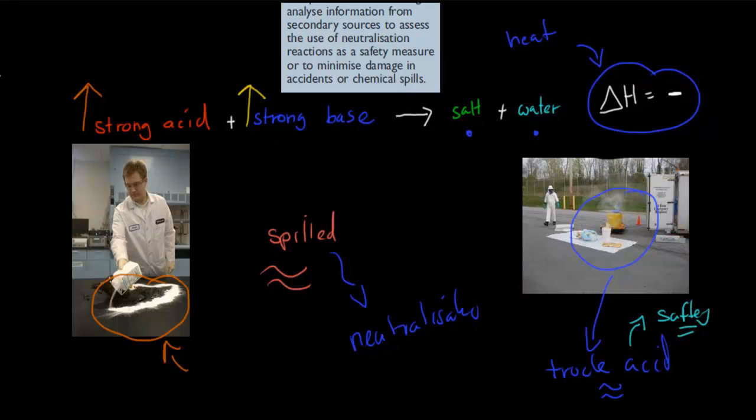This is what we're going to talk about. The dot point says analyze information from secondary sources to assess the use of neutralization reactions as a safety measure or to minimize damage in accidents or chemical spills. We're going to talk about what you would do in the lab and what you would do if there's a major spill maybe somewhere on the street, and how you could use a neutralization reaction to minimize the problem.